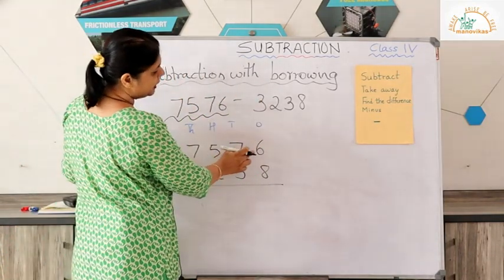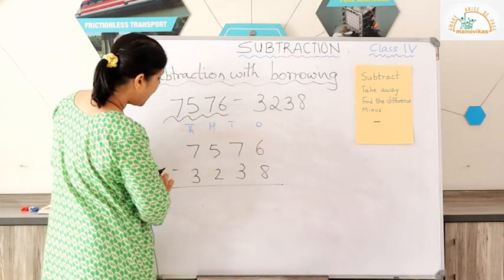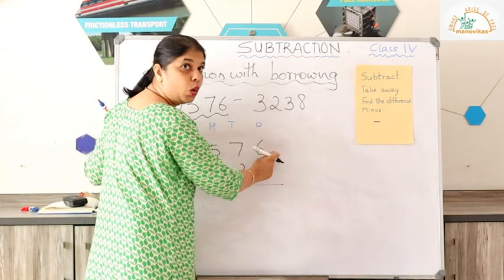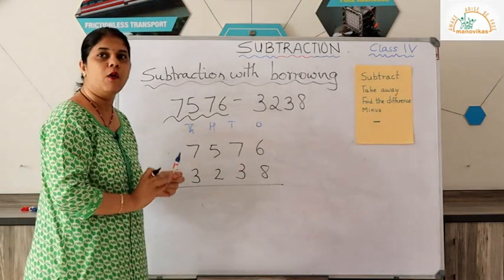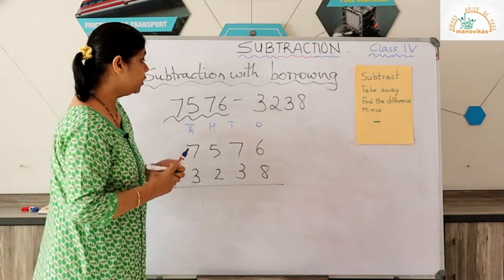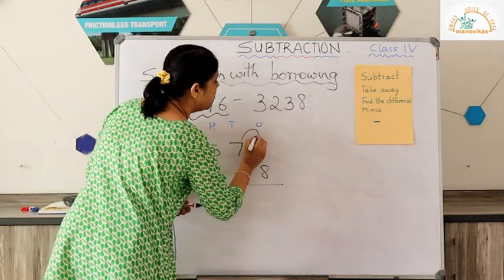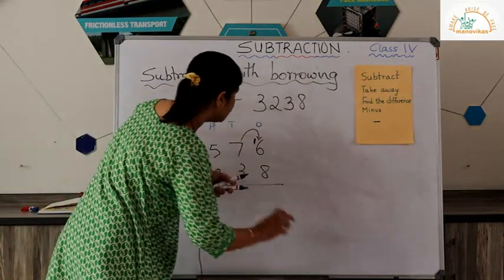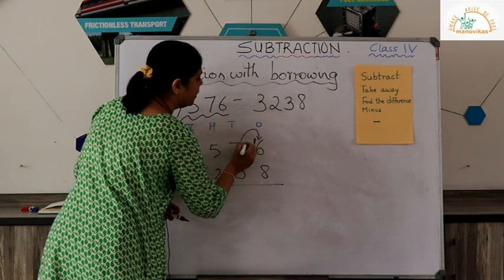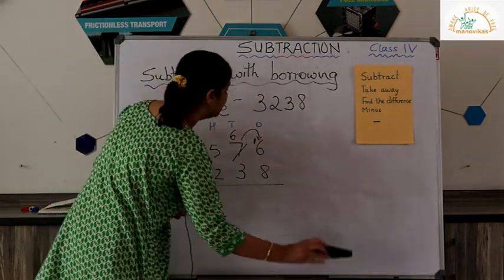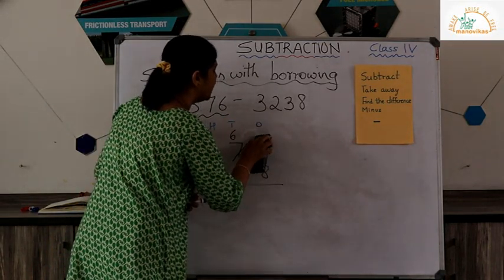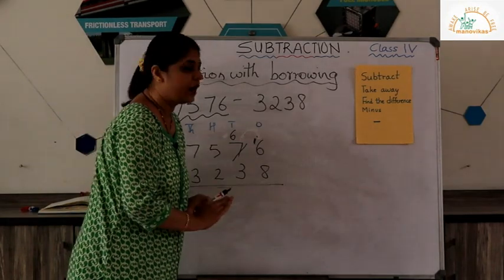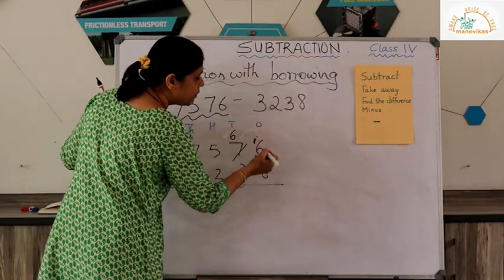Now, the digit in the ones place is six minus eight — you cannot subtract a bigger number from a smaller number. So six will borrow one from seven, which is in the tens place, and become sixteen. Since seven has given one, it becomes six.